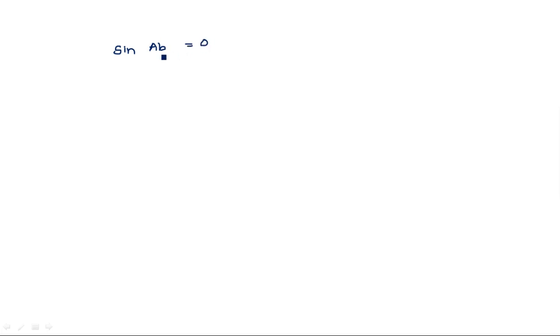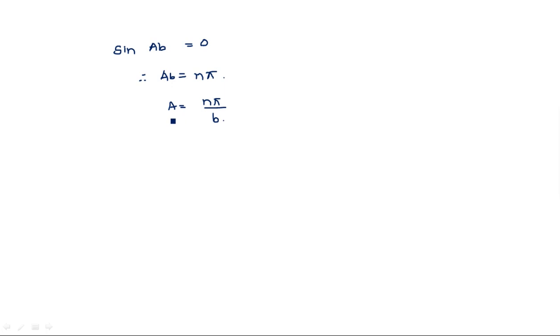Since sin(ab) = 0, this is analogous to sin(π) = 0, sin(2π) = 0, sin(3π) = 0, and so on. In general, we can write ab = nπ. Therefore a = nπ/b. So from the third boundary condition, we have obtained the value of a: a = nπ/b.